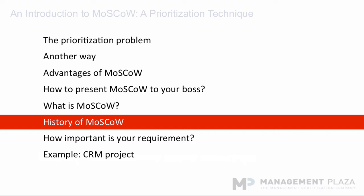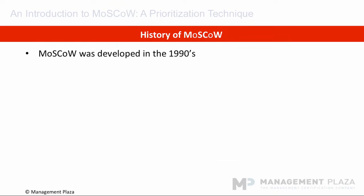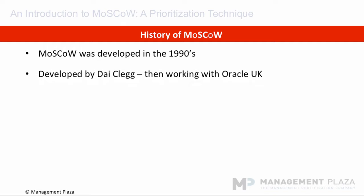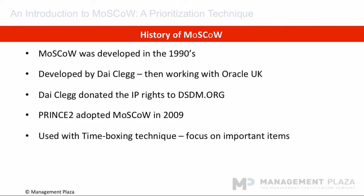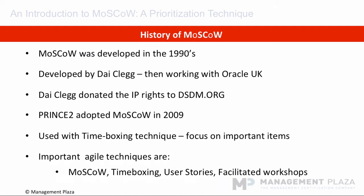Now you know a bit more about Moscow — next is where it came from. Moscow was developed in the 1990s by Dai Klag, who was then working for Oracle UK Consulting. Dai donated the intellectual property rights to dsdm.org, which is the most important name in the agile world — so thanks Dai for doing this. PRINCE2 also adopted Moscow in 2009 — perhaps they were waiting for the Cold War to end. Moscow is often used with the time boxing technique where a deadline is fixed so that the focus can be on the most important requirements. For me, the most important agile techniques are Moscow, time boxing, user stories, and facilitated workshops.